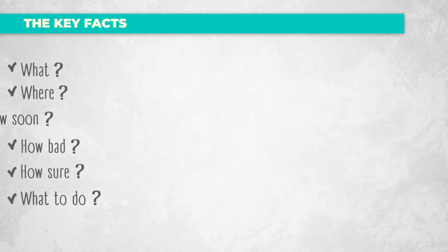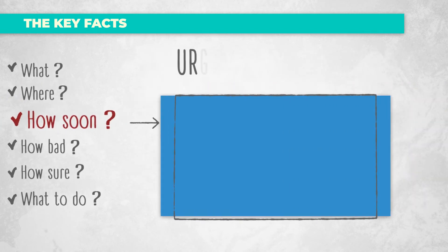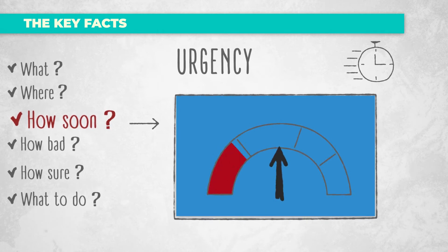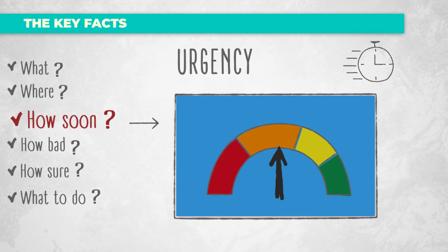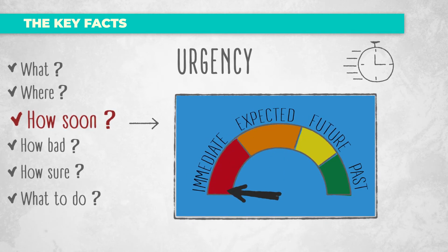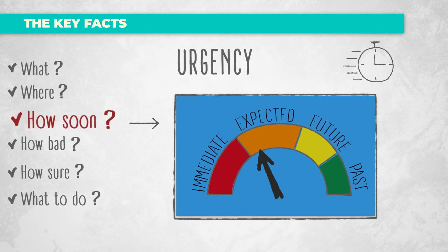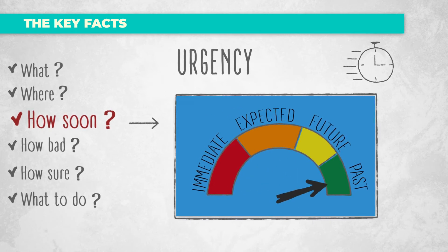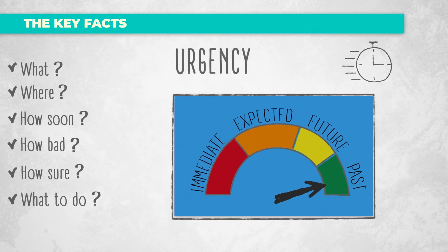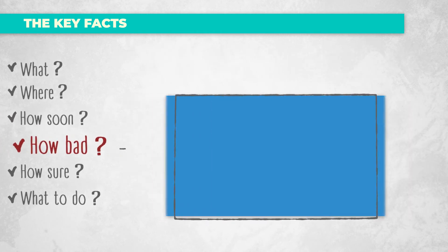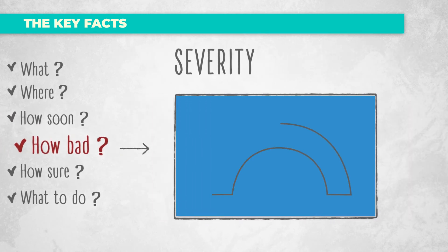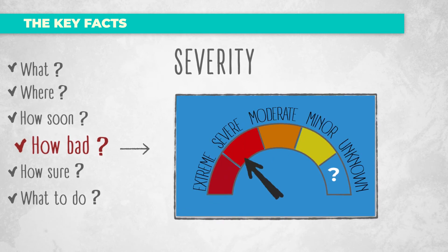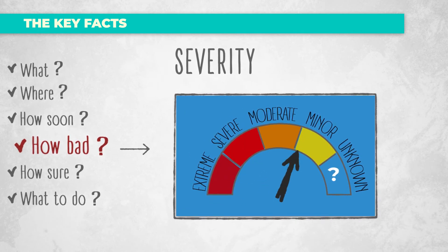The next key fact is the urgency level, which communicates how soon the emergency is expected to affect the alerting area. It can be immediate, expected, future, or past. A CAP message also communicates the severity, which indicates how bad the emergency may be. This can range from extreme to minor or unknown.